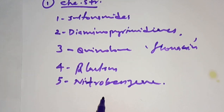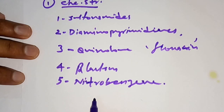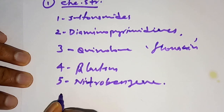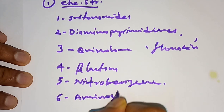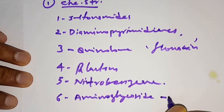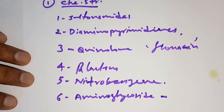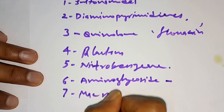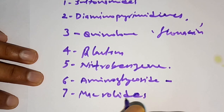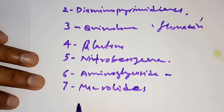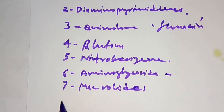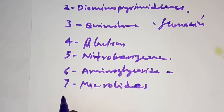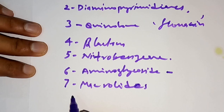Chloramphenicol belongs to the nitrobenzene class — any compound with a nitro group in the chain. Group six is aminoglycosides — examples include tobramycin, streptomycin, and gentamicin. Group seven is macrolide antibiotics — examples are clarithromycin, azithromycin, and erythromycin. There are also nitroimidazoles such as metronidazole and tinidazole, and azole derivatives such as miconazole, clotrimazole, and fluconazole.